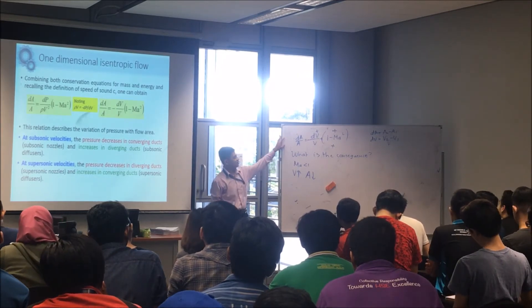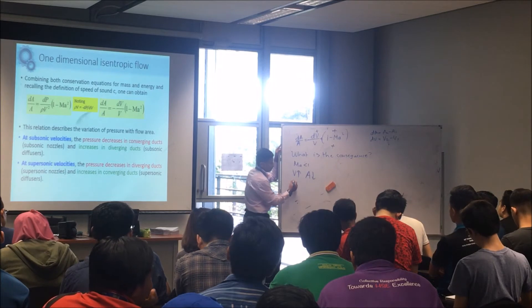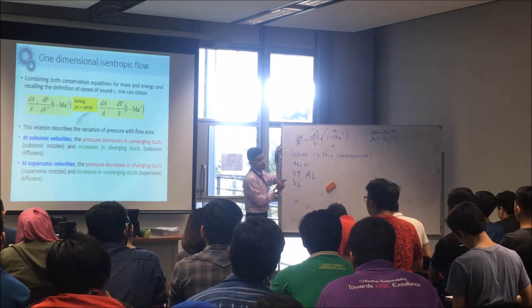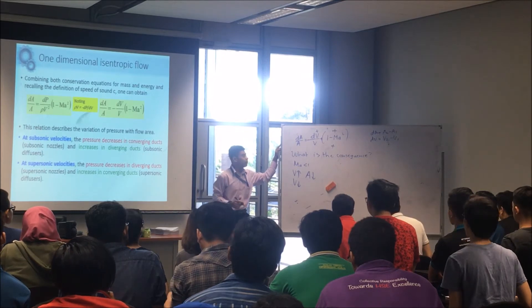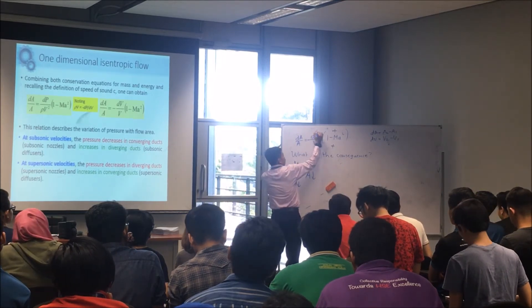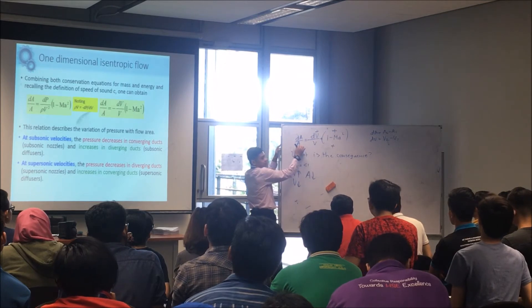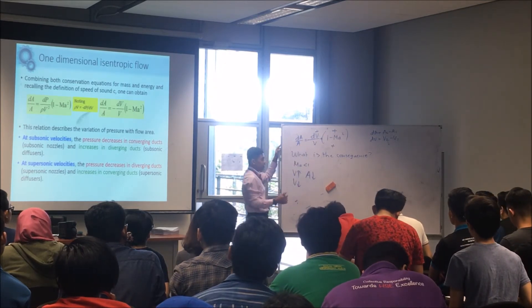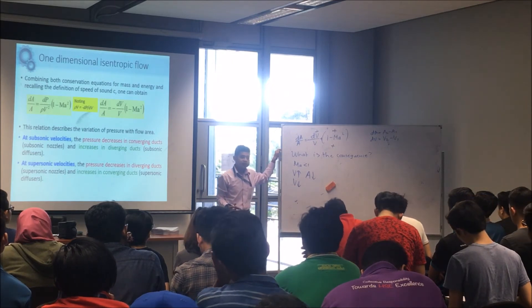So this solves your question. Now if you want velocity to decrease, when velocity is decreasing dV is negative. When dV negative and this one positive becomes negative. dA negative - when dA negative which means area decreases.